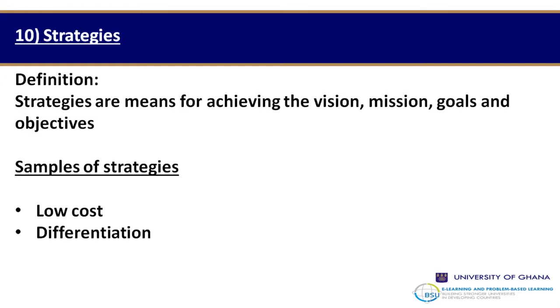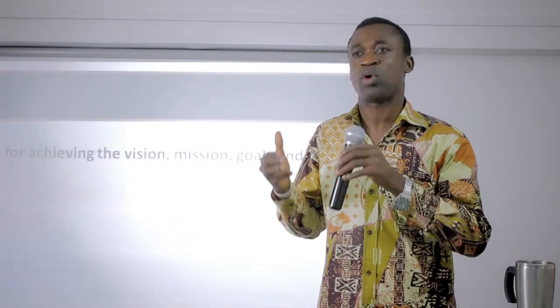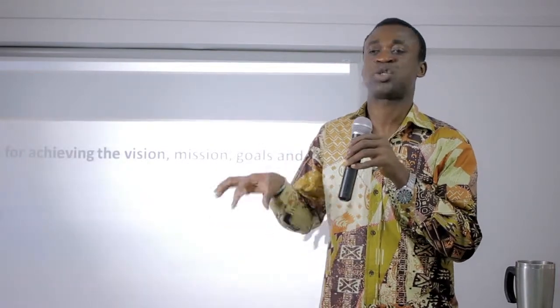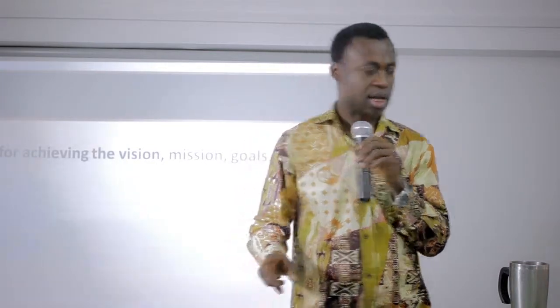After objectives we come to strategies. Organizations have objectives, and we ask: how is the organization going to achieve them? You need to have strategies. Strategies are simply the approaches we are going to use to achieve our objectives. How do we achieve our vision, our mission, our strategic priorities and intent? We need strategies.